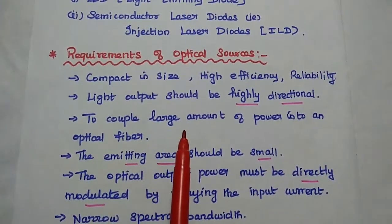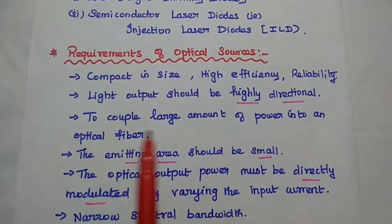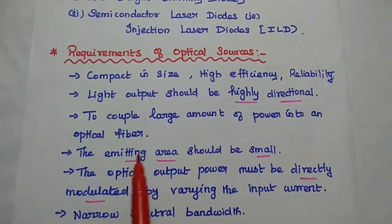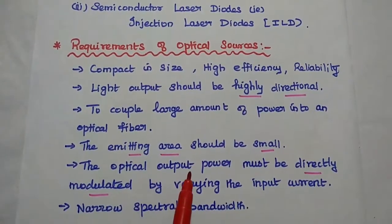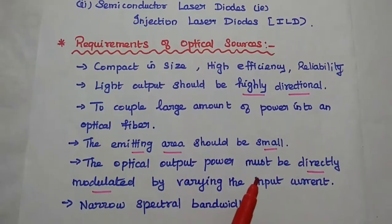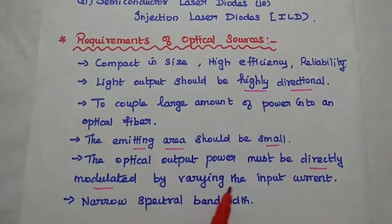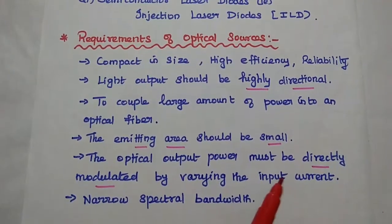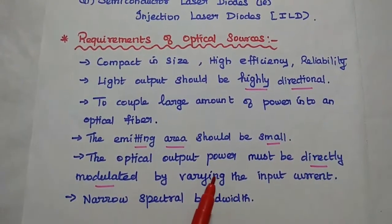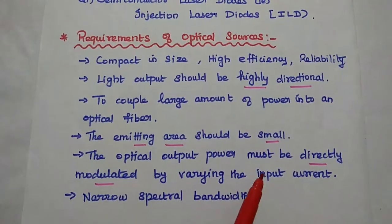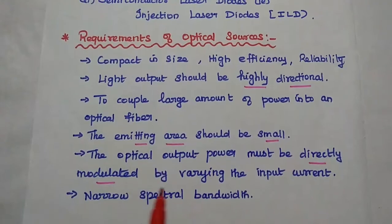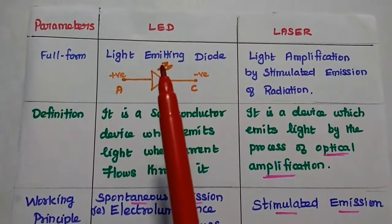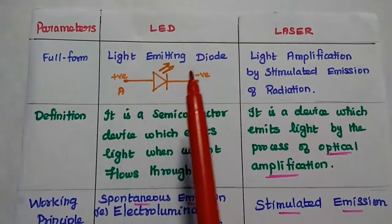The light output should be highly directional. It has to couple large amount of power into an optical fiber. The emitting area should be narrower. The optical output power must be directly modulated by varying the input current. Then only we can get high conversion efficiency. The narrow spectral bandwidth. These are all the basic requirements. Next, the comparison of LED and laser.